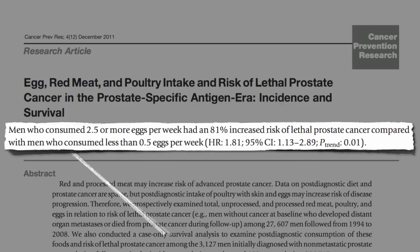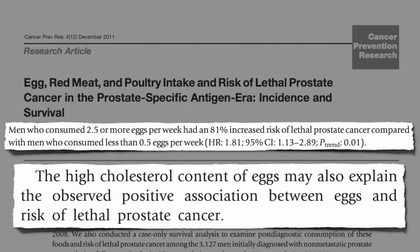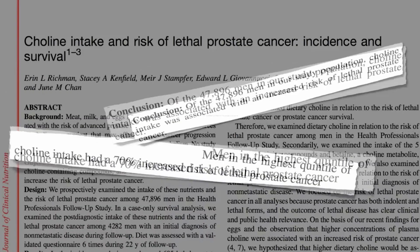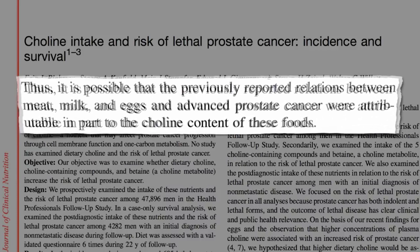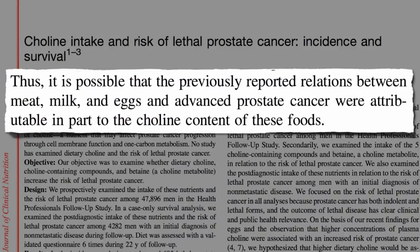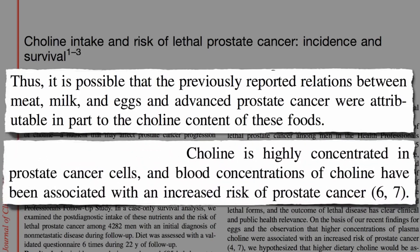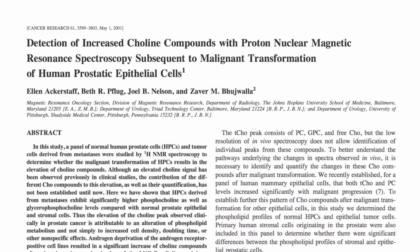Now, it could just be the cholesterol in eggs that's increasing fatal cancer risk, but it could also be the choline — and that may be why meat, milk, and eggs have all been associated with advanced prostate cancer. In fact, choline is so concentrated in cancer cells that if you follow choline uptake in the body, you can track the spread of cancer throughout your body.